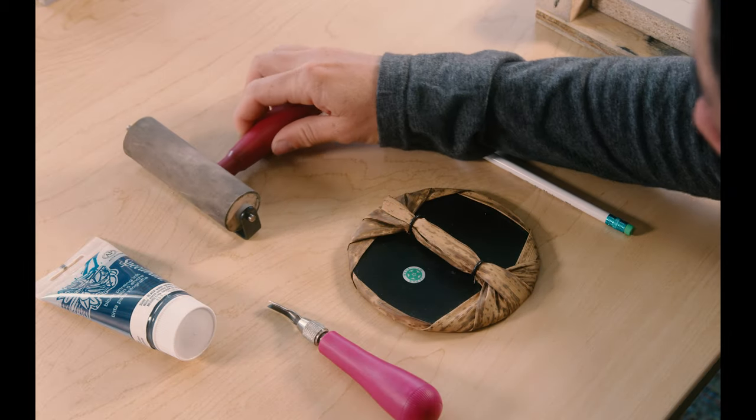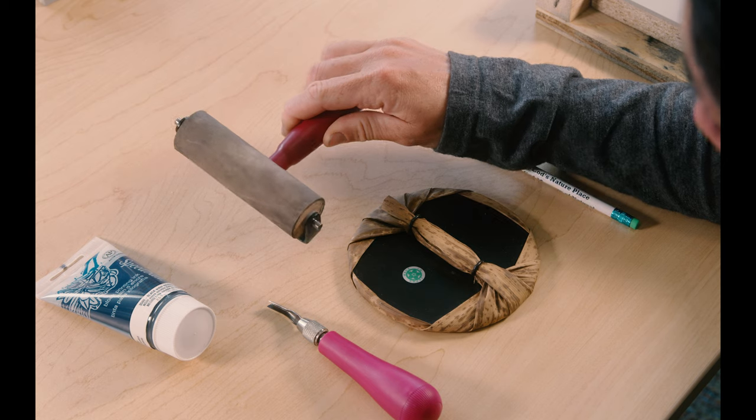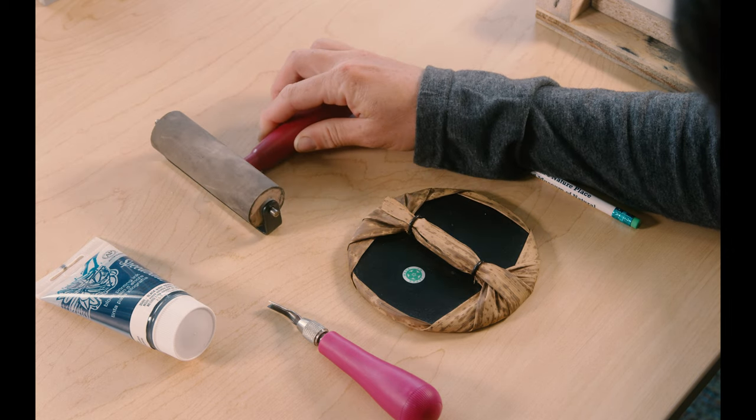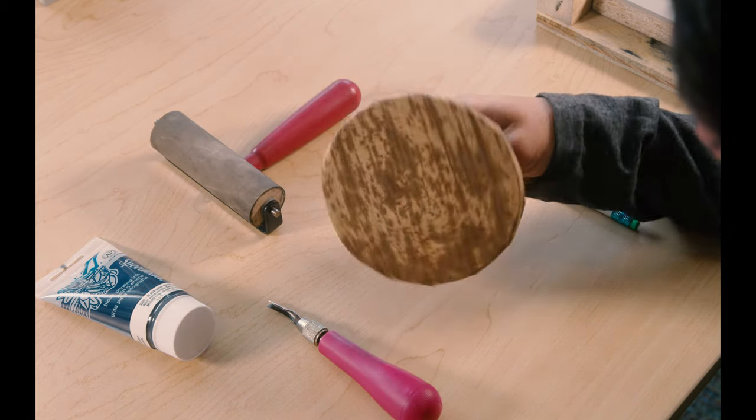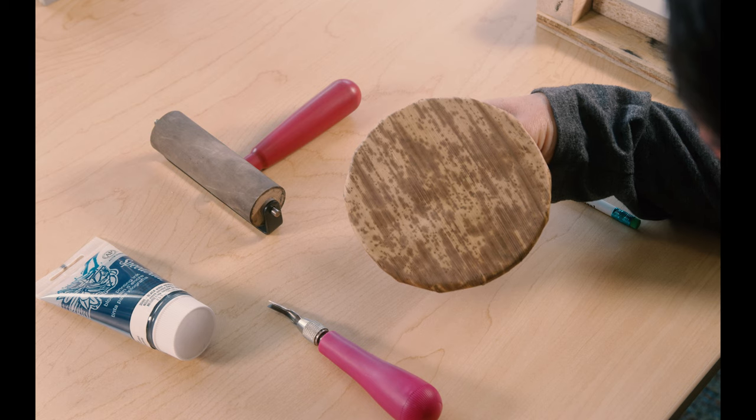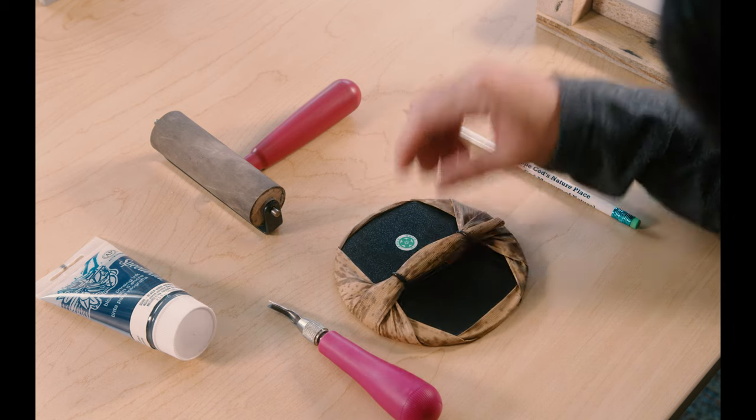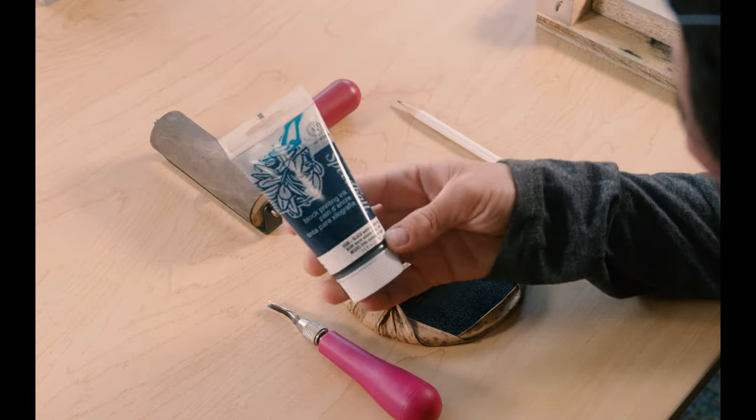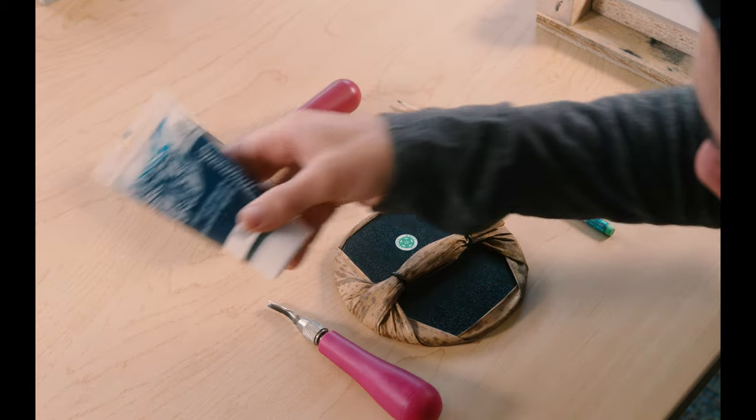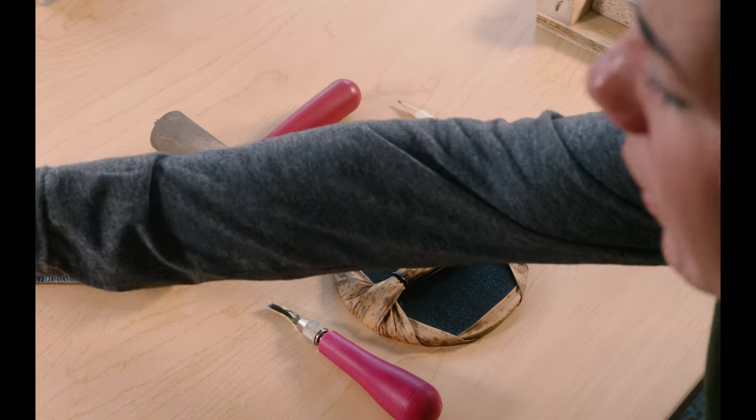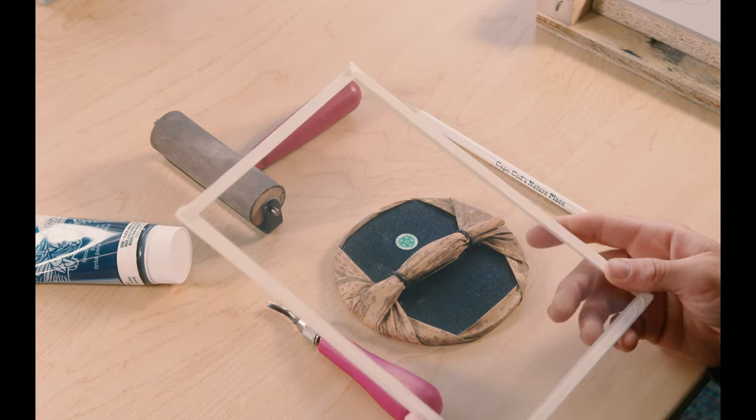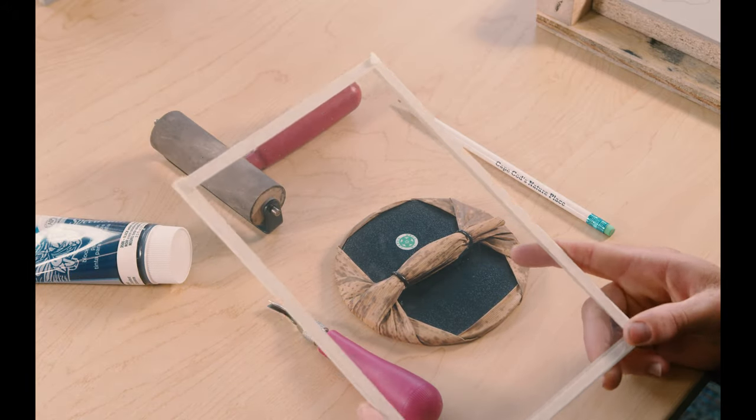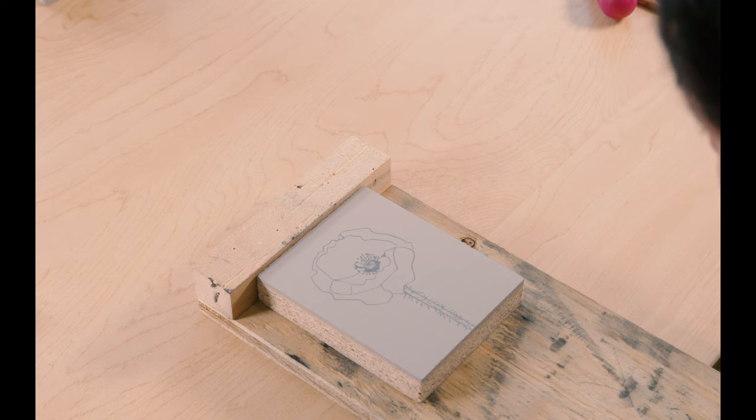We'll be using a rubber brayer for rolling the ink on our block, a barren for printing the block on paper, a regular pencil, some speedball block printing ink, this plexiglass inking plate, and we'll also be using a wooden bench hook and our linoleum block.